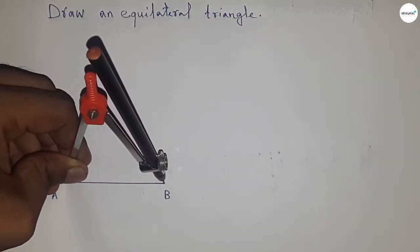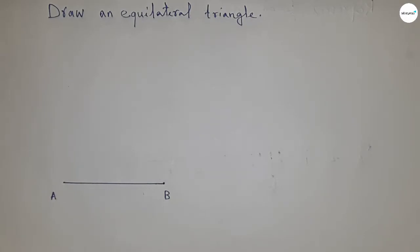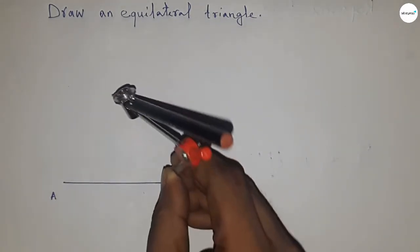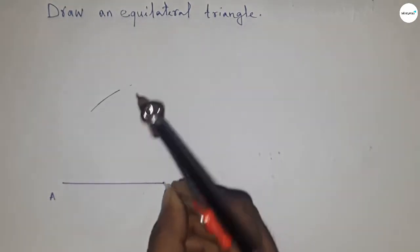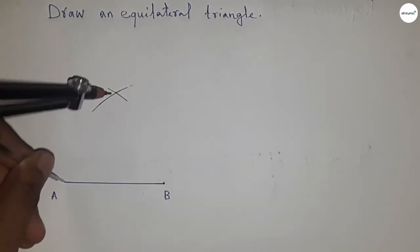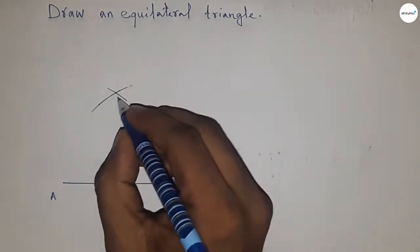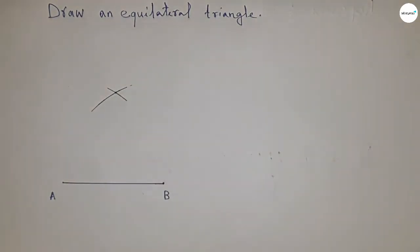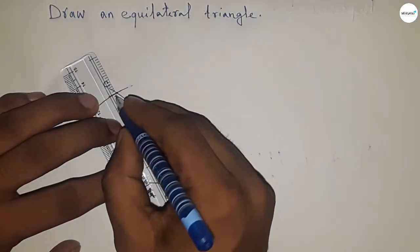Next, taking the length AB by compass and putting the compass here and drawing a curve here with same length, and putting the compass here and drawing a curve here. Both intersecting at a point C. Now joining this side.